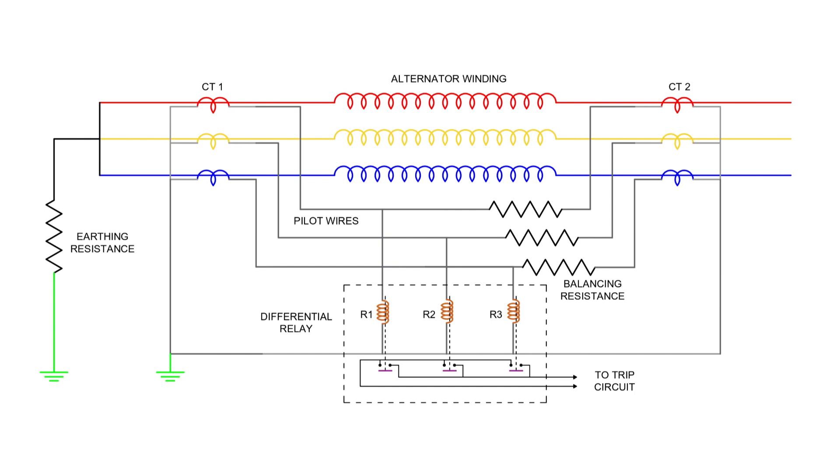To prevent this, balancing resistors are introduced into the circuit. These resistors are connected on the side with lower impedance to equalize the total resistance of both pilot cable paths. By ensuring that both CT secondary circuits face the same total impedance, balancing resistors maintain symmetry, reduce error current, and stabilize relay operation. This technique is essential in maintaining the reliability and accuracy of differential protection in real-world systems.